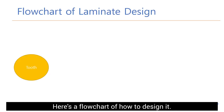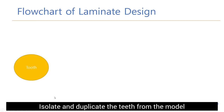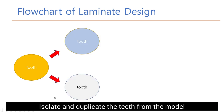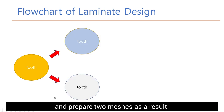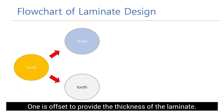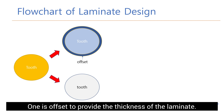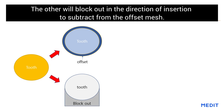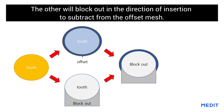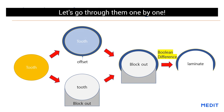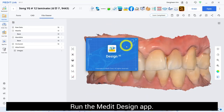Here's a flowchart of how to design it: isolate and duplicate the teeth from the model and prepare the mesh. One mesh is offset to provide the thickness of the laminate; the other will be blocked out in the direction of insertion to subtract from the offset mesh. Let's go through them one by one. Launch the Medit Design app.